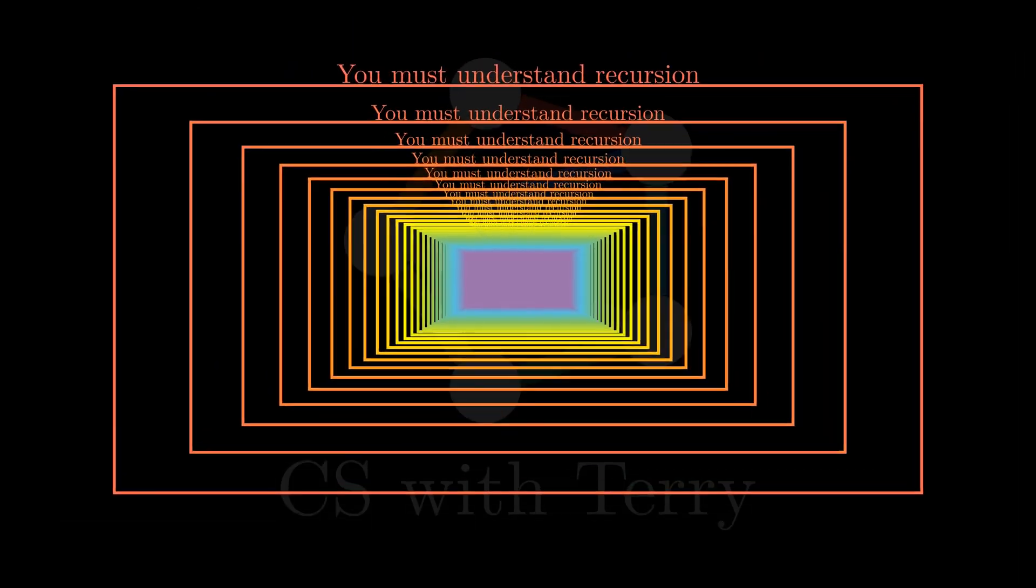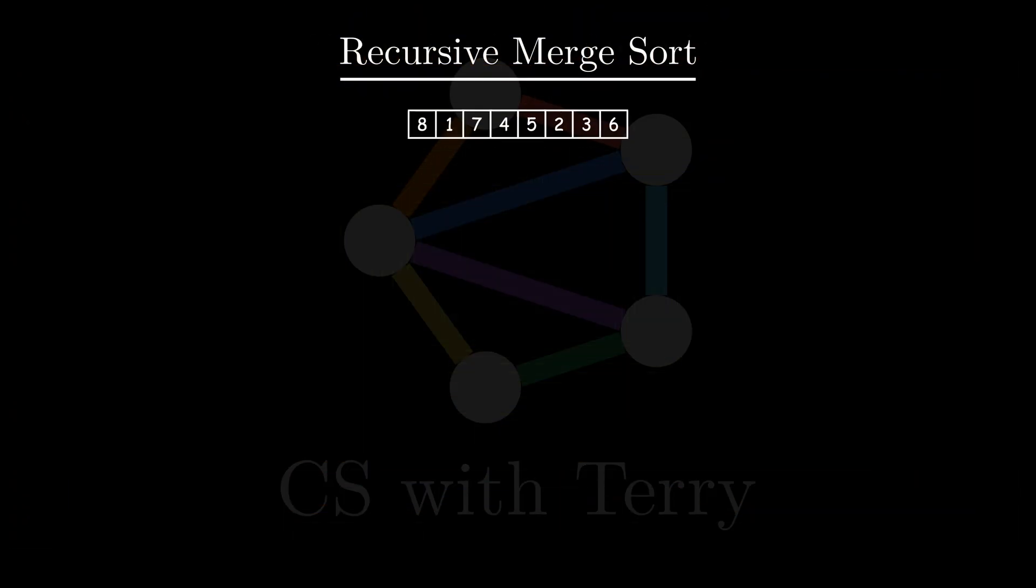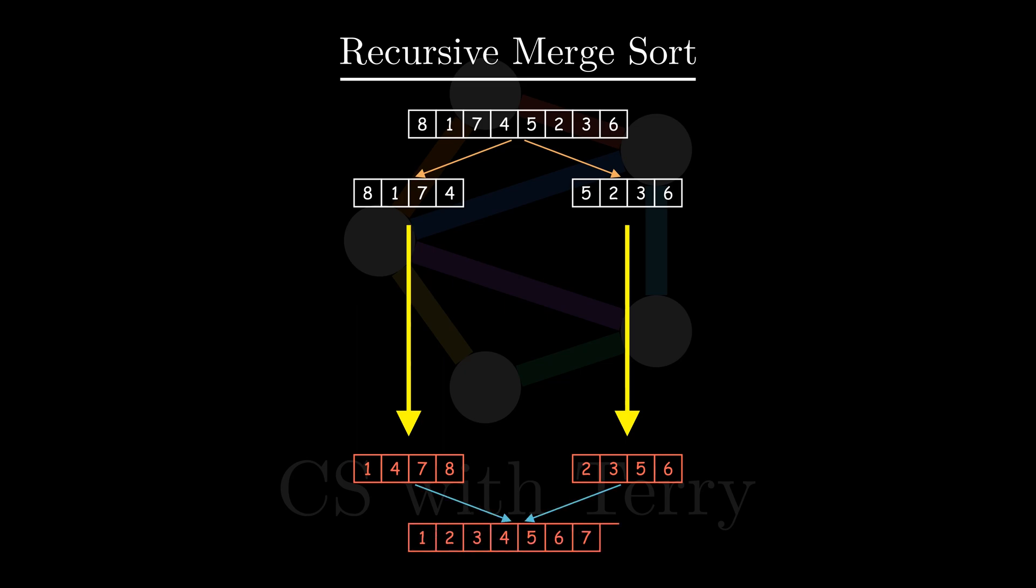Recursion is very common in computer programming. It refers to the method of defining functions that call themselves. Recursion can decompose a complex problem into smaller sub-problems.